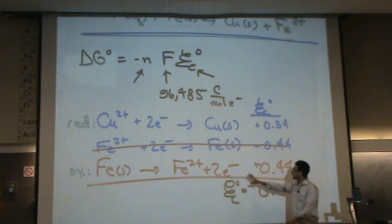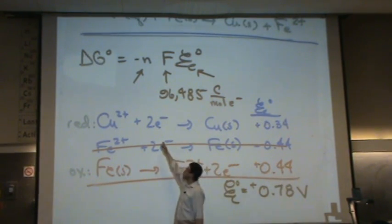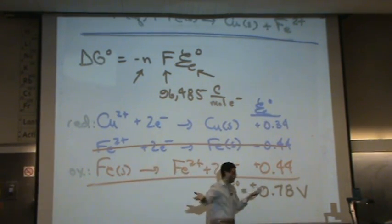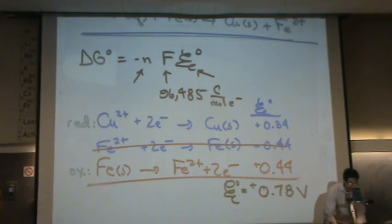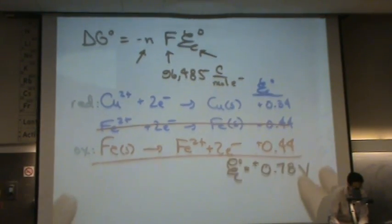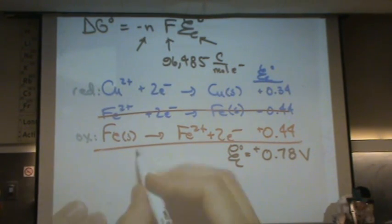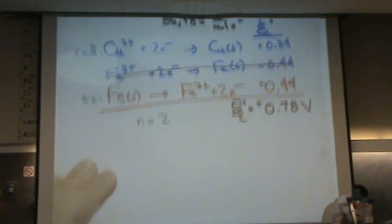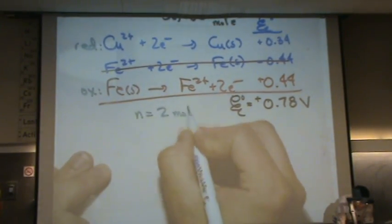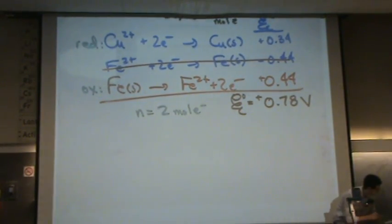Two. Because when I add these up, two electrons will cancel with two electrons. That's all n is. There's nothing secret about it. It's just the amount of electrons that are transferred or more practically will cancel. So n equals 2 moles of electrons, technically.